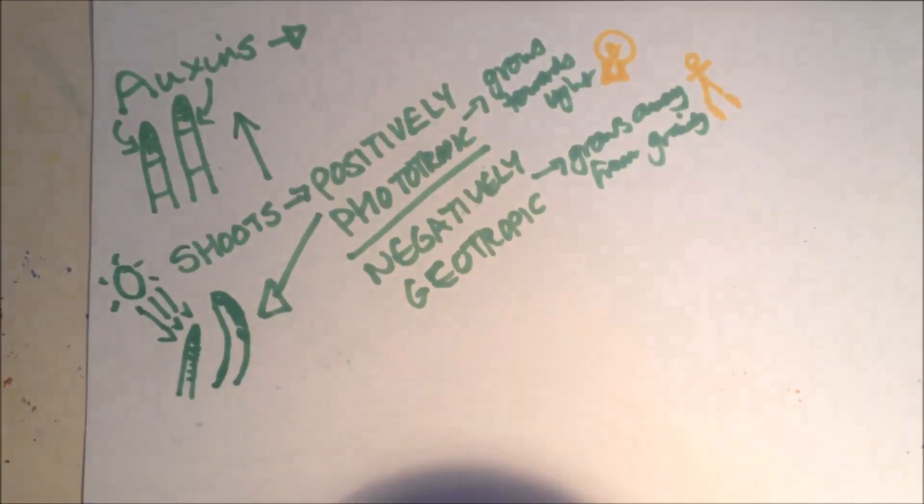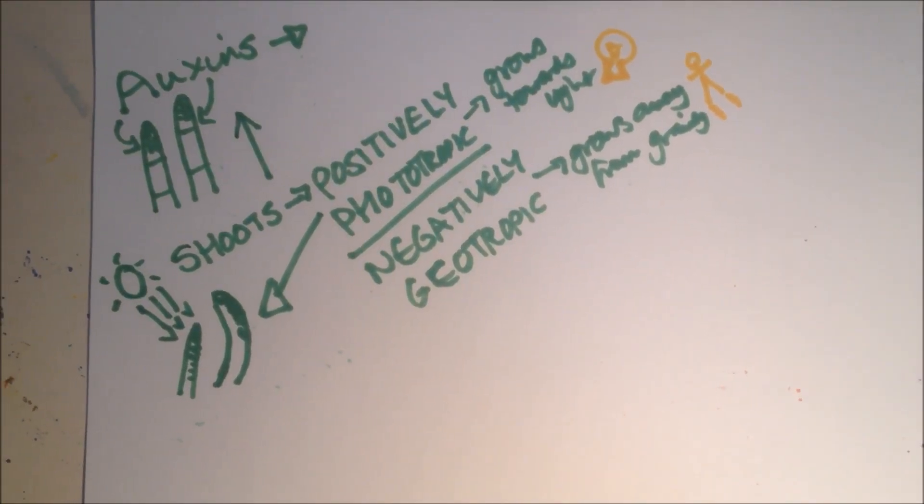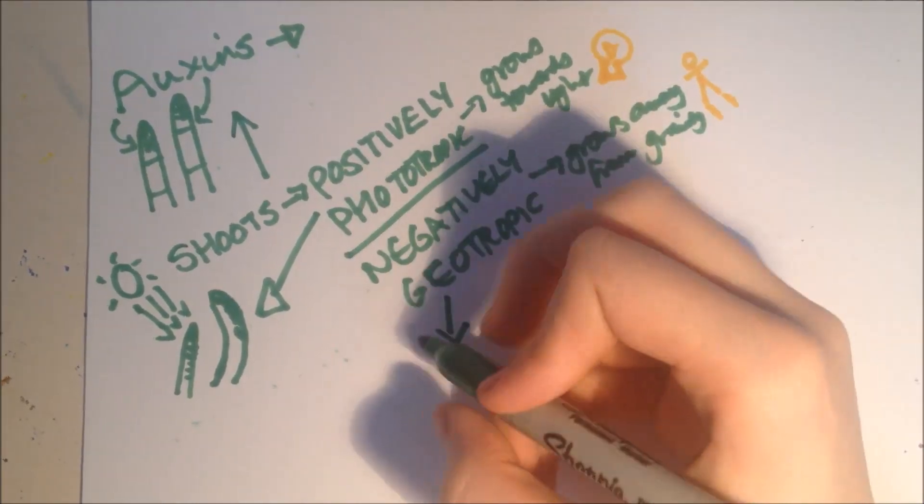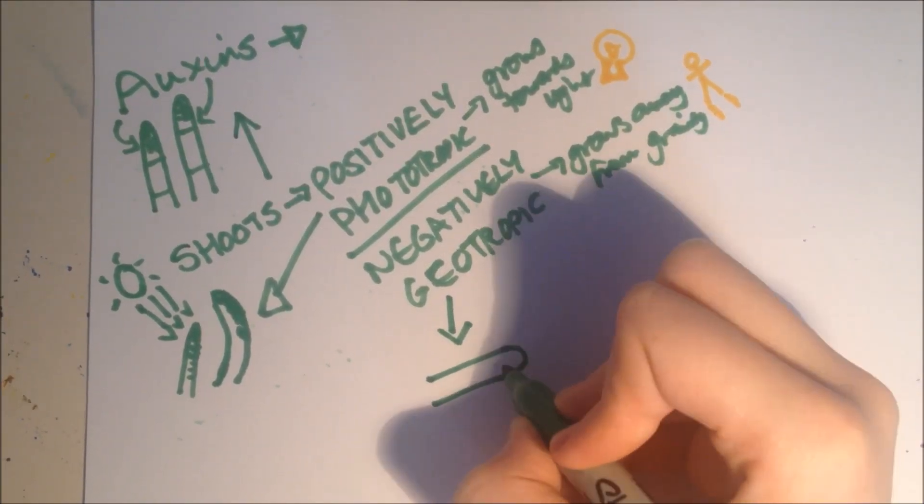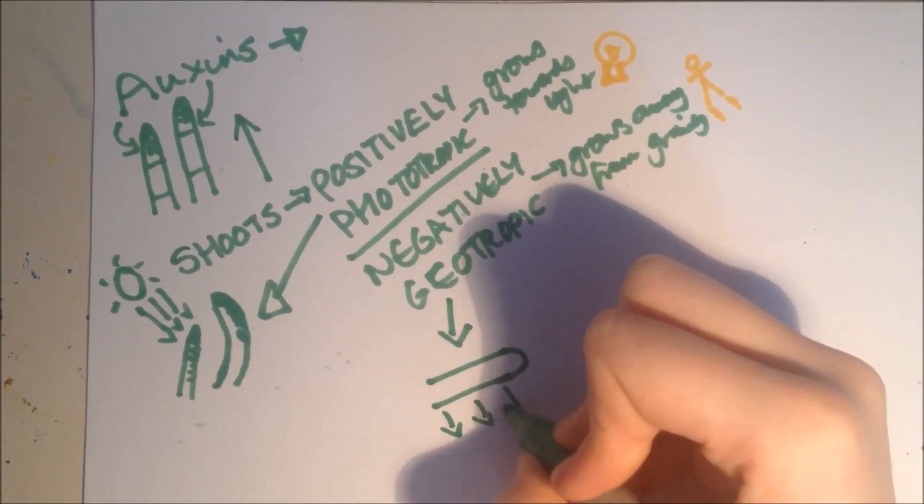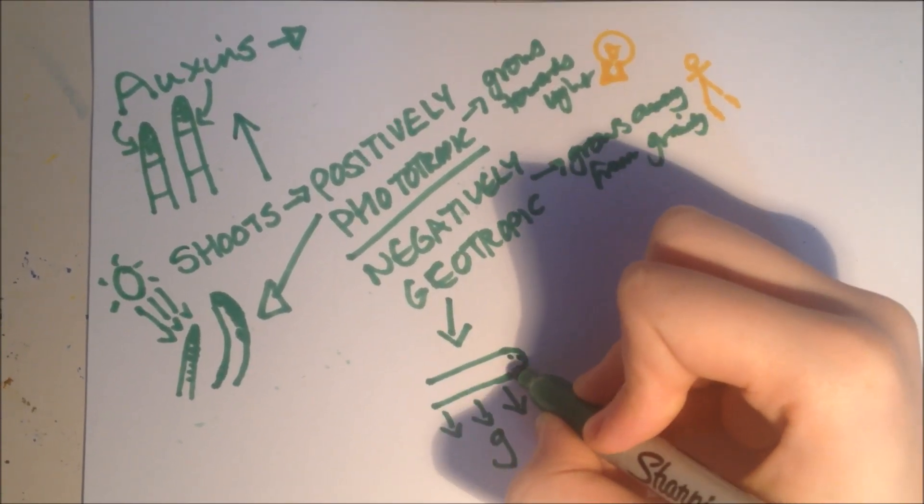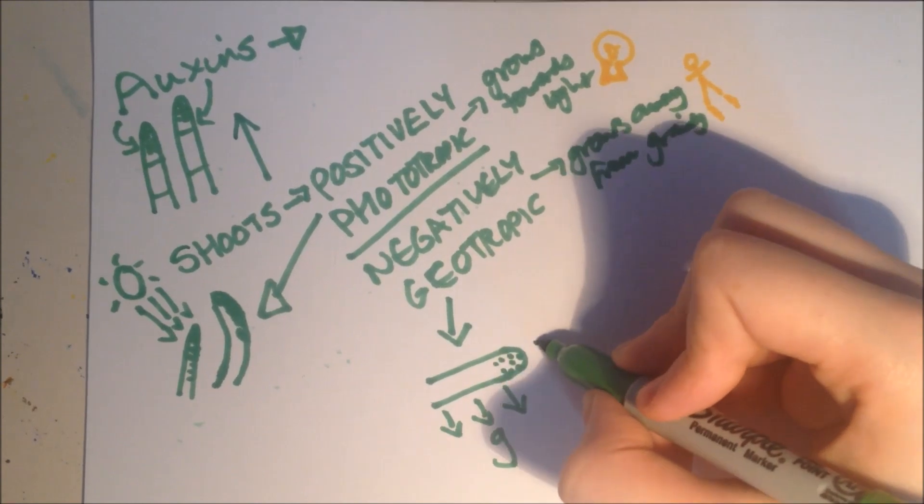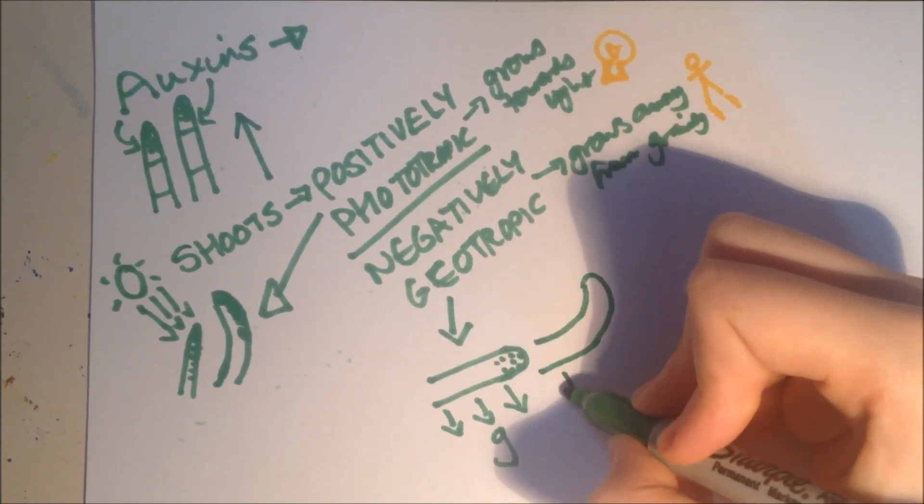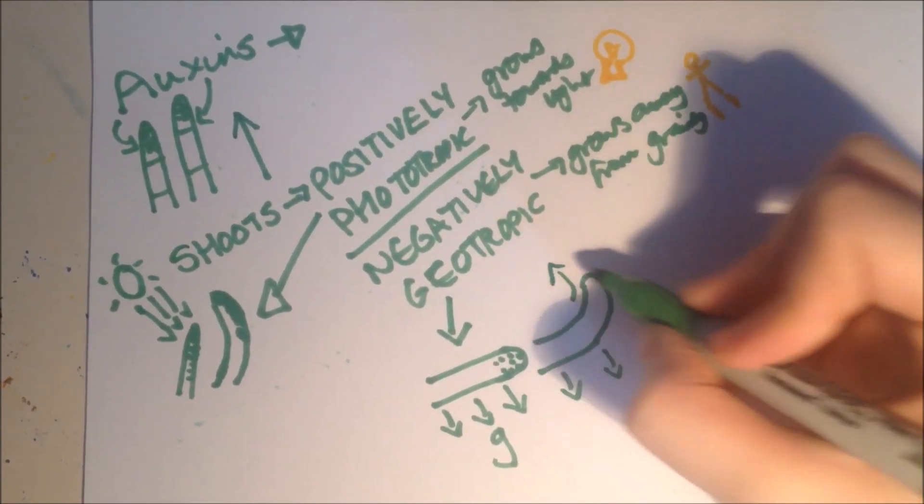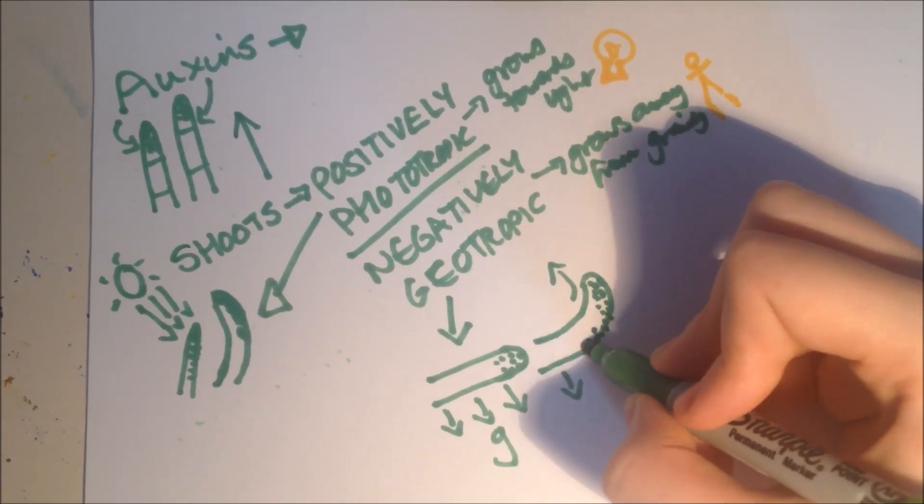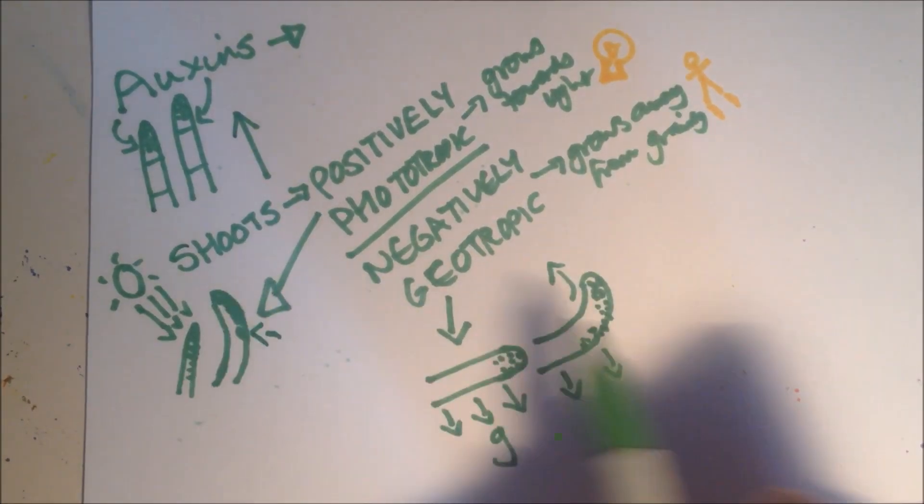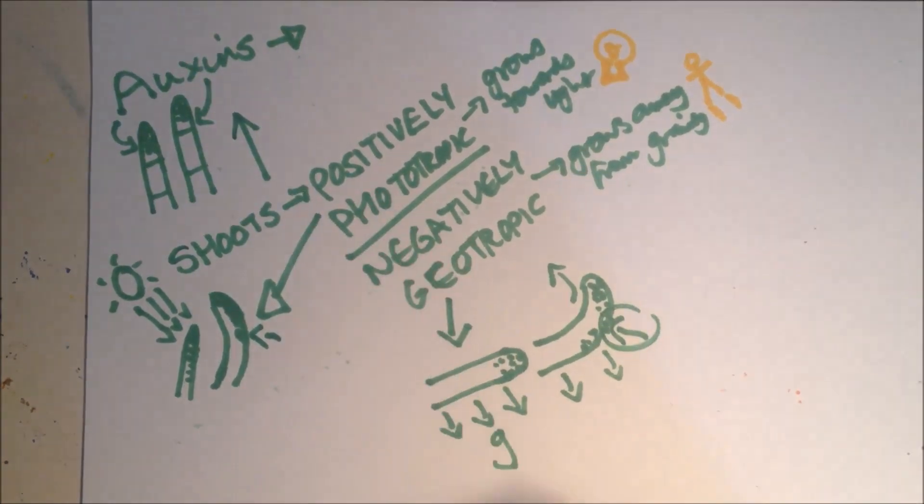When they grow away from gravity, this is the negatively geotropic part. This is the normal shoot, this is gravity. They grow away from gravity, going up this way, because there's more auxin on the lower side. Like there was more auxin on the shaded side, there's more on the lower side.